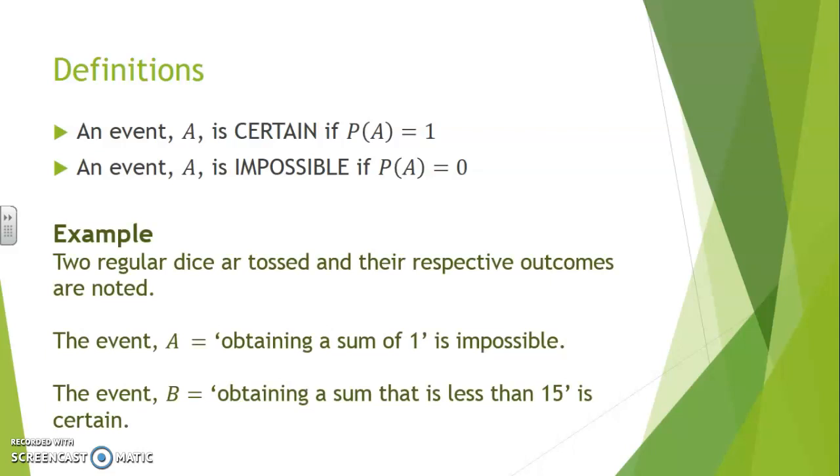Staying in our situation where two regular dice are tossed and their respective outcomes are noted. The event A, obtaining a sum of 1, is impossible, since all sums will be of at least 2. Therefore the probability of A in this case would be 0.